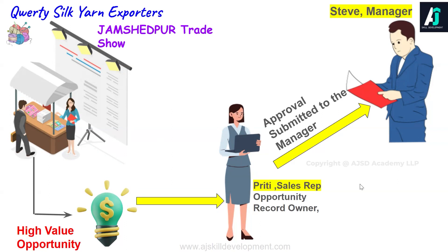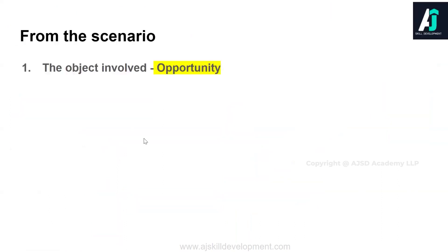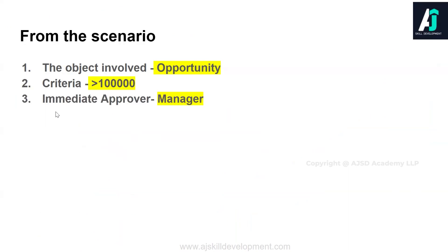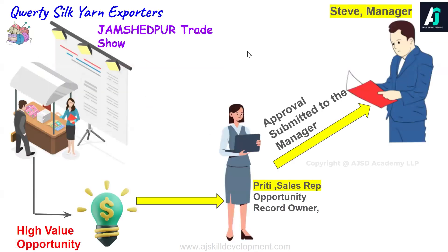From this scenario, the object involved is the Opportunity standard object. The criteria will be, for example, amount greater than one lakh. And the immediate approver for Prithi is her manager Steve. These three things you should have understood from this scenario. In the next video, we are going to set up the org — before implementing the approval process we need to make some setup in our org. We will meet in the next video.